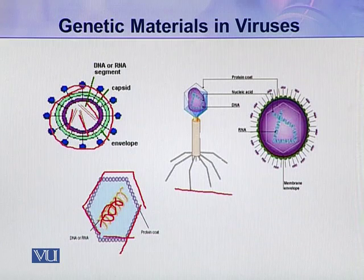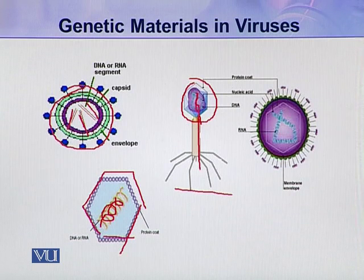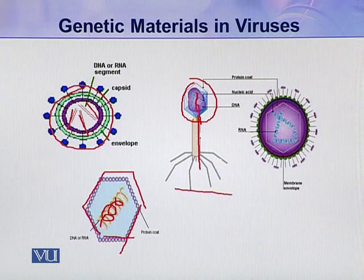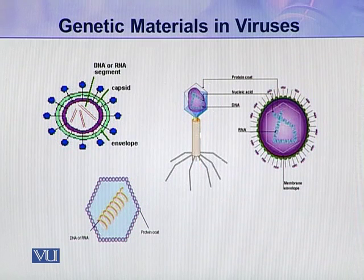This is a bacteriophage. In a bacteriophage, a single molecule of nucleic acid is wrapped by a capsid which is called the head, and this is the tail. The tail and head are made up of proteins. Similarly, in this other virus, this is the protein coat also called the capsid, and inside the capsid there is a single molecule of nucleic acid. So these are very simple types of organisms.